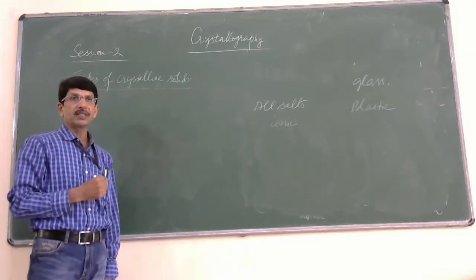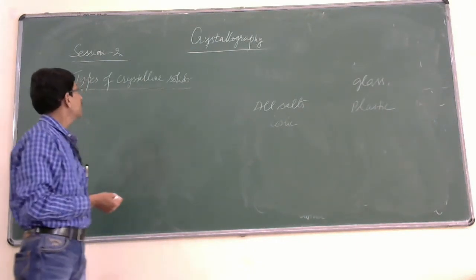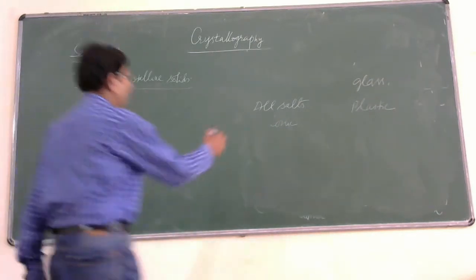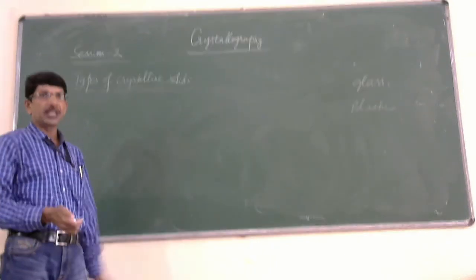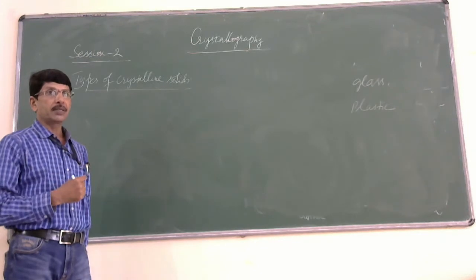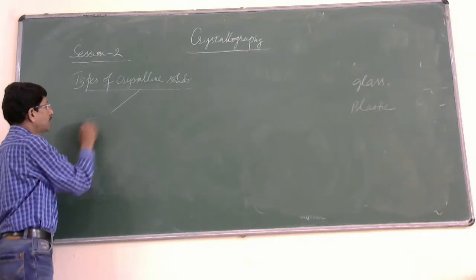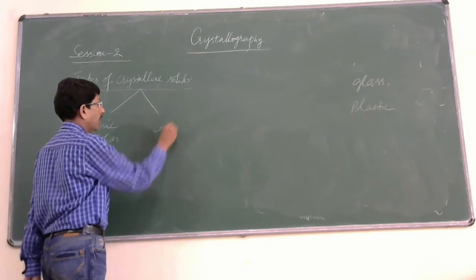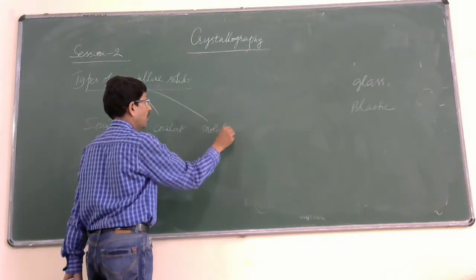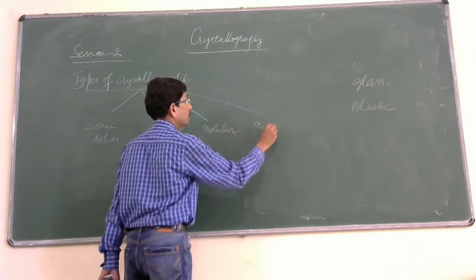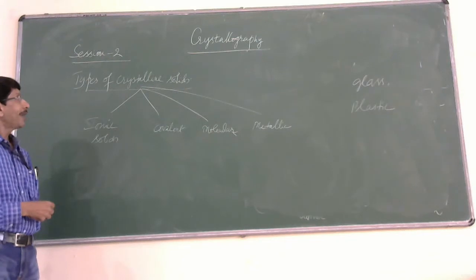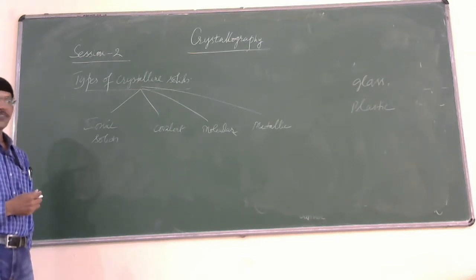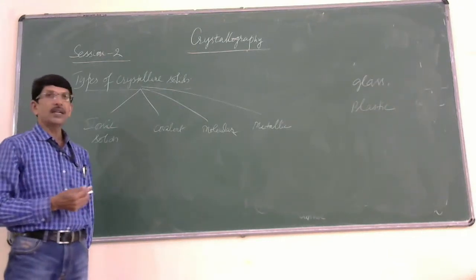Today we shall discuss the different types of crystalline solids. You have learned that crystalline solids have a definite shape, a definite geometry, a sharp melting point, and they are anisotropic. Depending upon the type of particles that make up a crystalline solid, we can classify crystalline solids into ionic solids, covalent solids, molecular solids, and metallic solids.